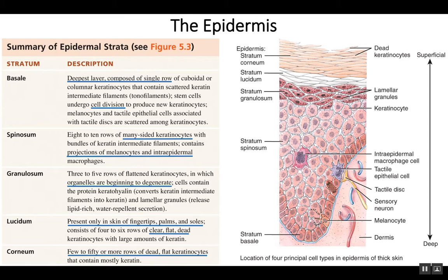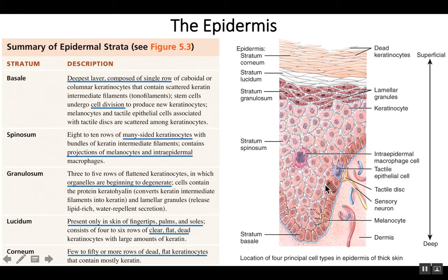What the stratum basale is known for is having stem cells that can become keratinocytes. These cells divide very rapidly compared to other layers — more mitosis occurs here than in the other layers. This is because they are very close to the blood supply. The tiny blood vessels in the dermis supply oxygen and nutrients, so the closer you are to them the more rapidly the cells divide. Most of these cells are going to become keratinocytes, which primarily form the epidermis.